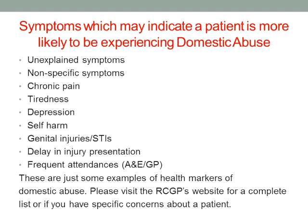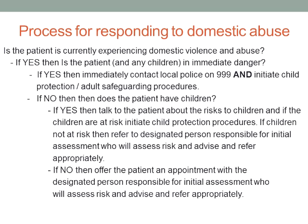If a patient discloses that they are currently experiencing domestic violence or abuse, the first thing for the clinician to do is to assess whether the patient and any children are in immediate danger. If the answer is yes, immediate action has to be taken: contact the local police on 999 and initiate child protection and adult safeguarding procedures.